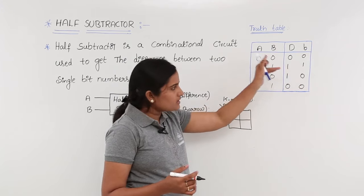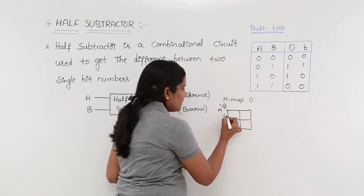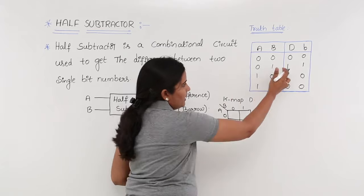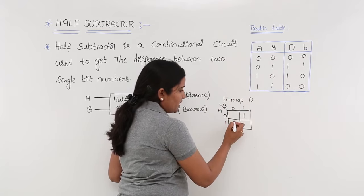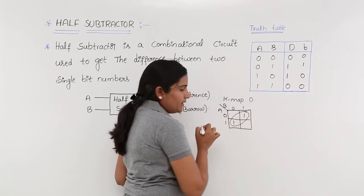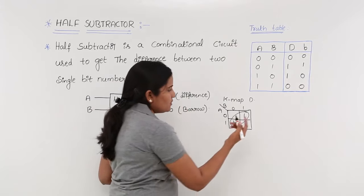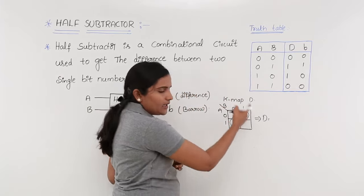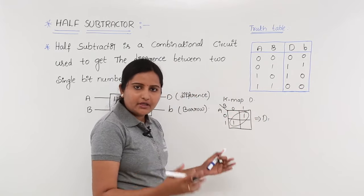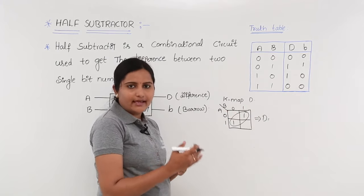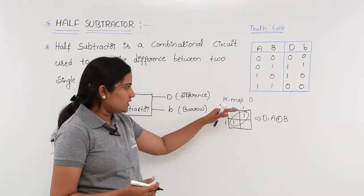We have a 1 where A equals 0 and B equals 1, and another 1 where A equals 1 and B equals 0 — these form a diagonal grouping. As I mentioned, if the total diagonal is covered by grouping you can take that as XOR of those variables, so D is equal to A XOR B. If you are not sure about diagonal grouping, you can group individually, add the prime implicants, and solving that expression also gives the same XOR result.